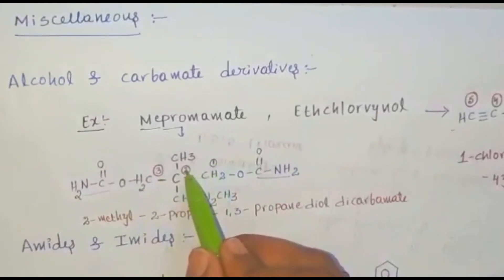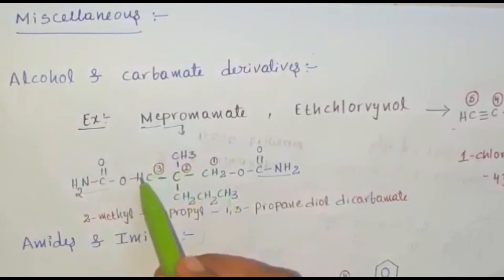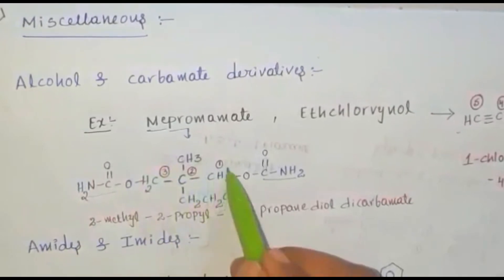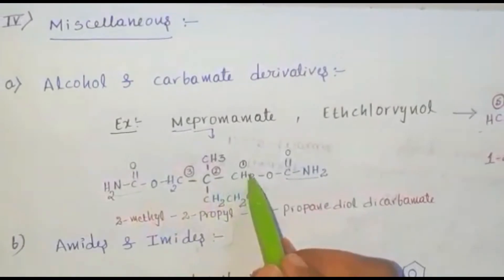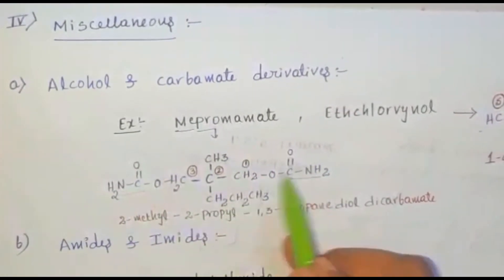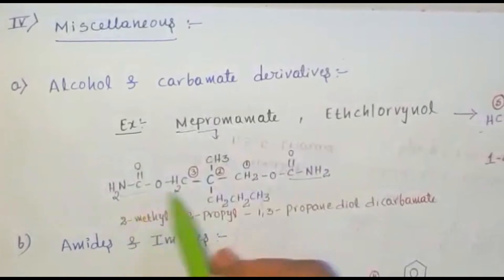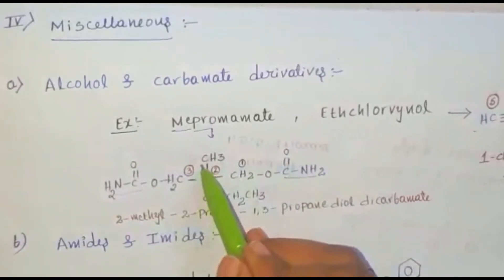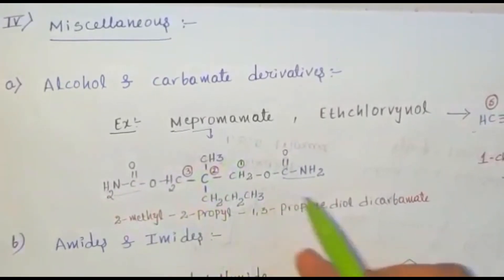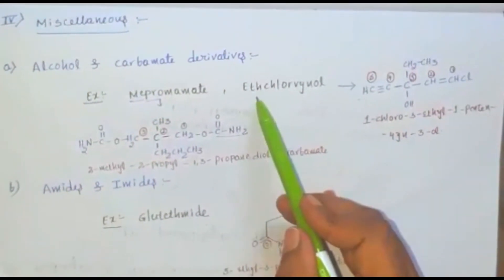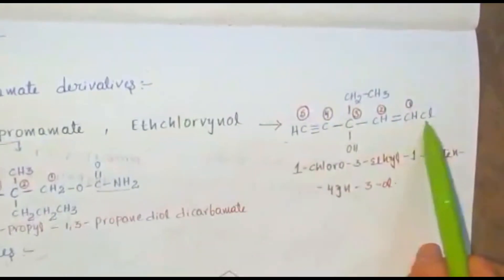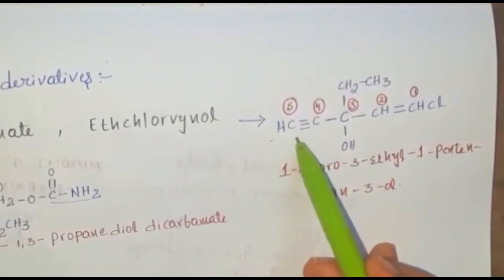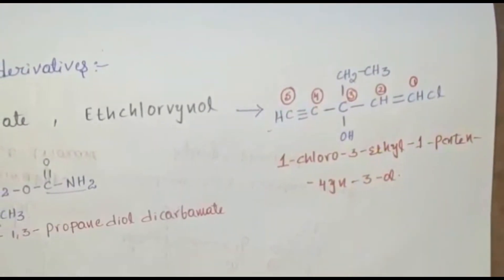The structure is a propane (1,2,3) side chain — it is a propanediol attached with two carbamate groups (dicarbamate), containing one methyl group and one propyl group — that is called meprobamate. Next, ethchlorvynol: 'eth' indicates ethyl, 'chlor' indicates chloro, and 'vynol' indicates a vinyl group containing an alcoholic group.